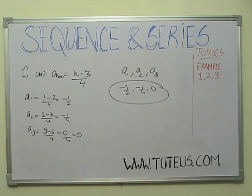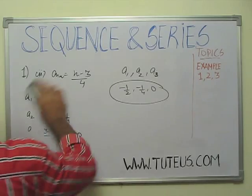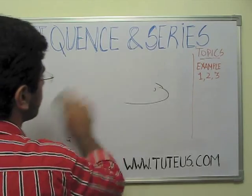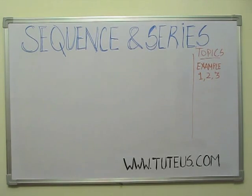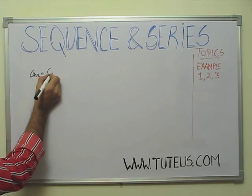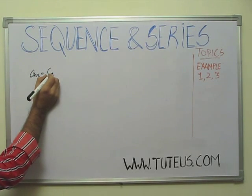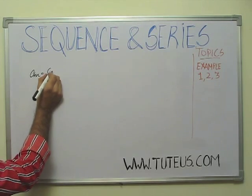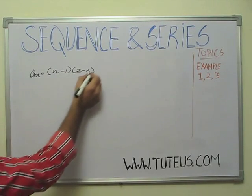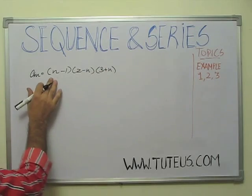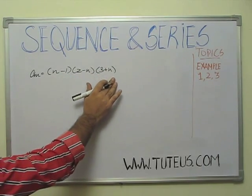This is the 20th term of the sequence defined by this. Look, I have a sequence here. It has its 20th term. Sequence, an is equal to n minus 1, 2 minus n, and into 3 plus n.